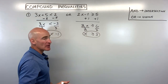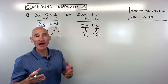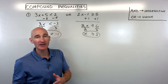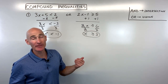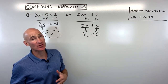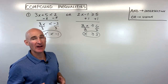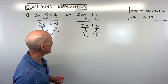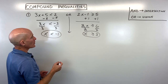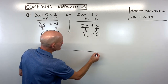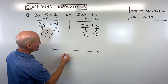One important thing: if you multiply or divide both sides of an inequality by a negative number, the inequality sign flips or changes direction. Since this is an 'or' problem, we can go to our number line and say x is less than negative 1.